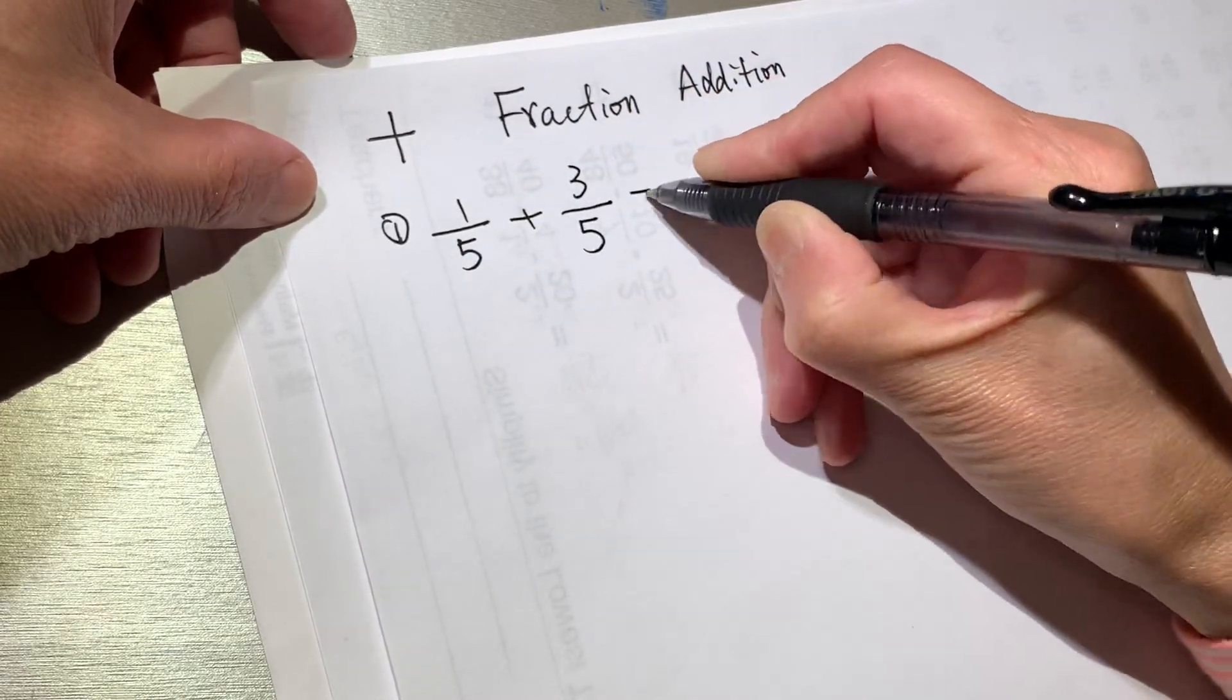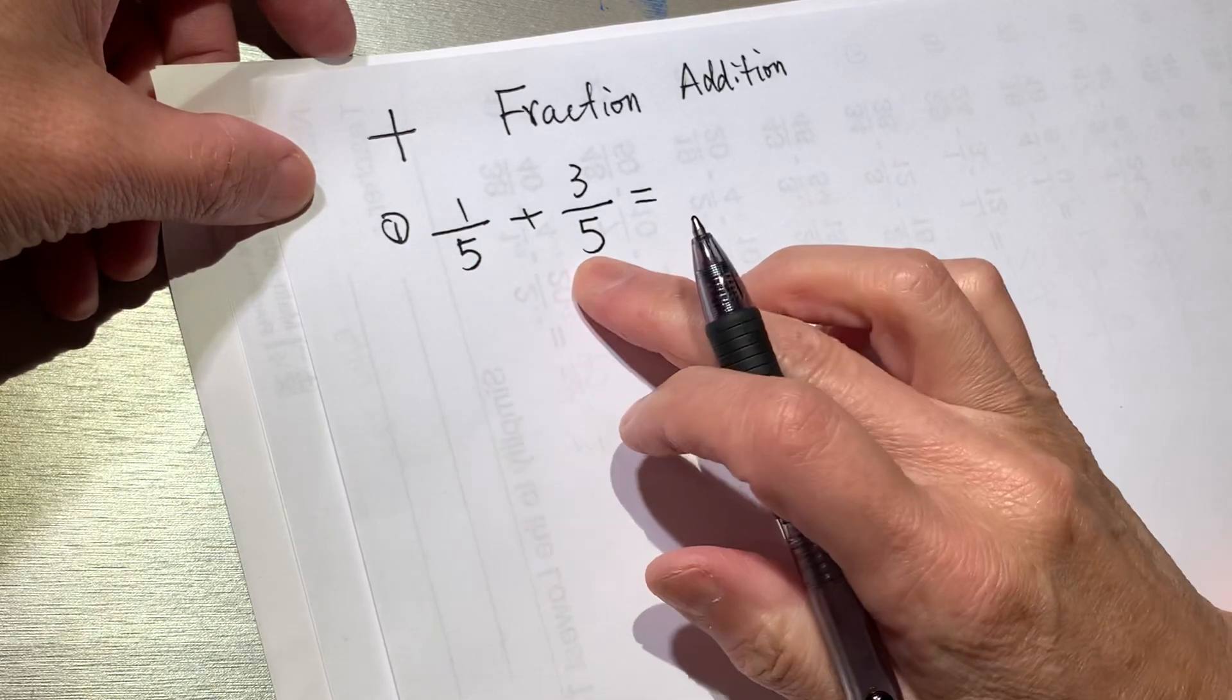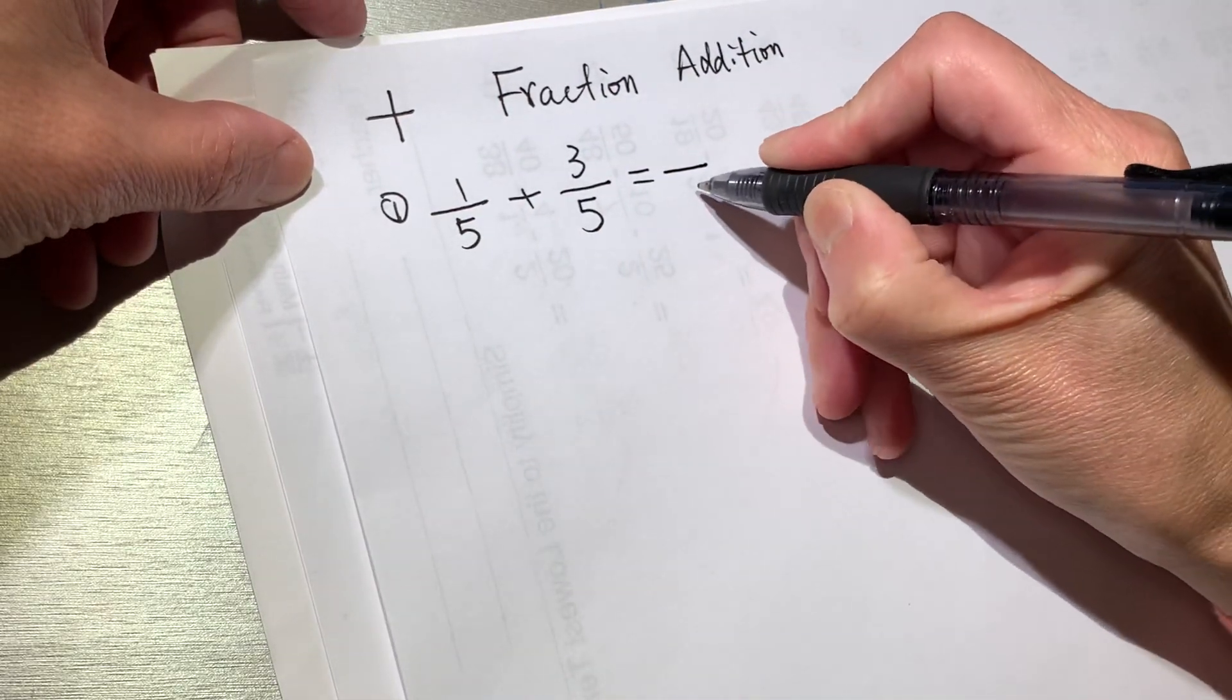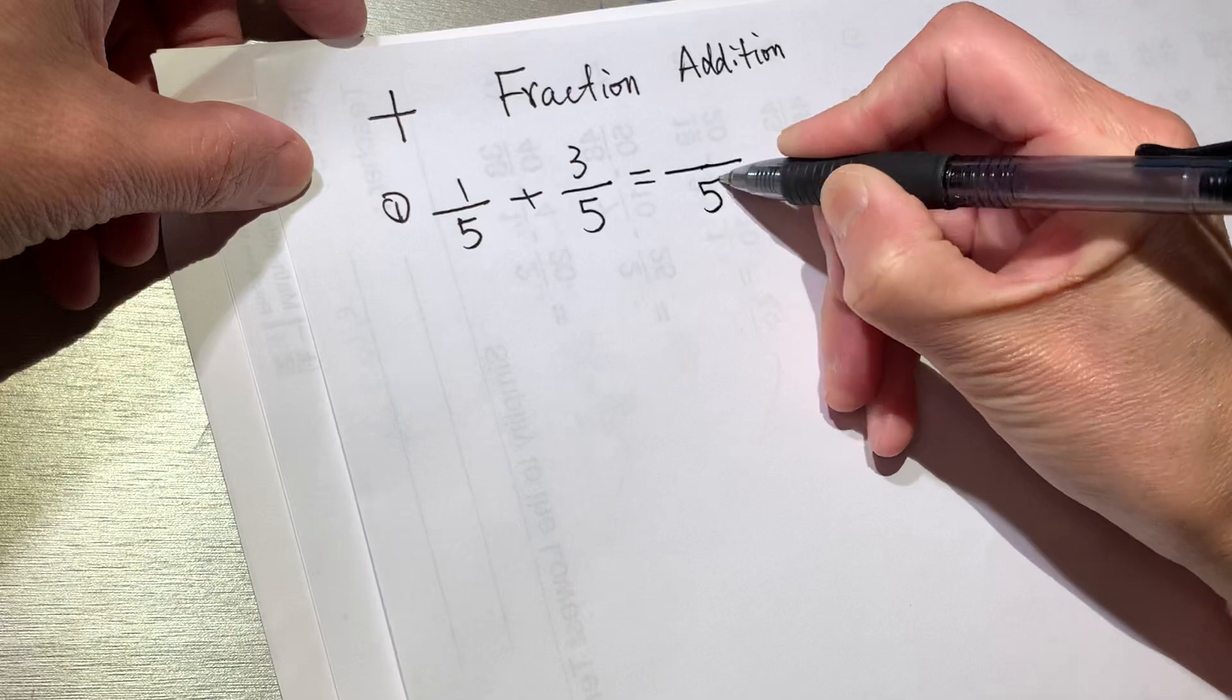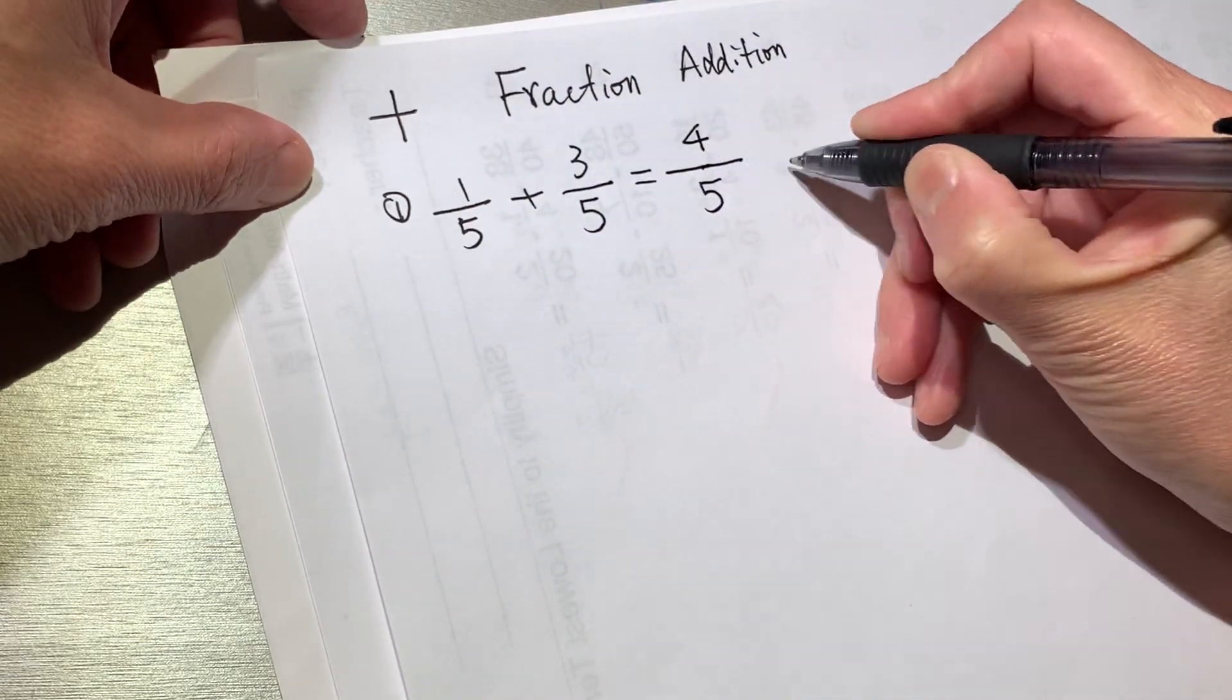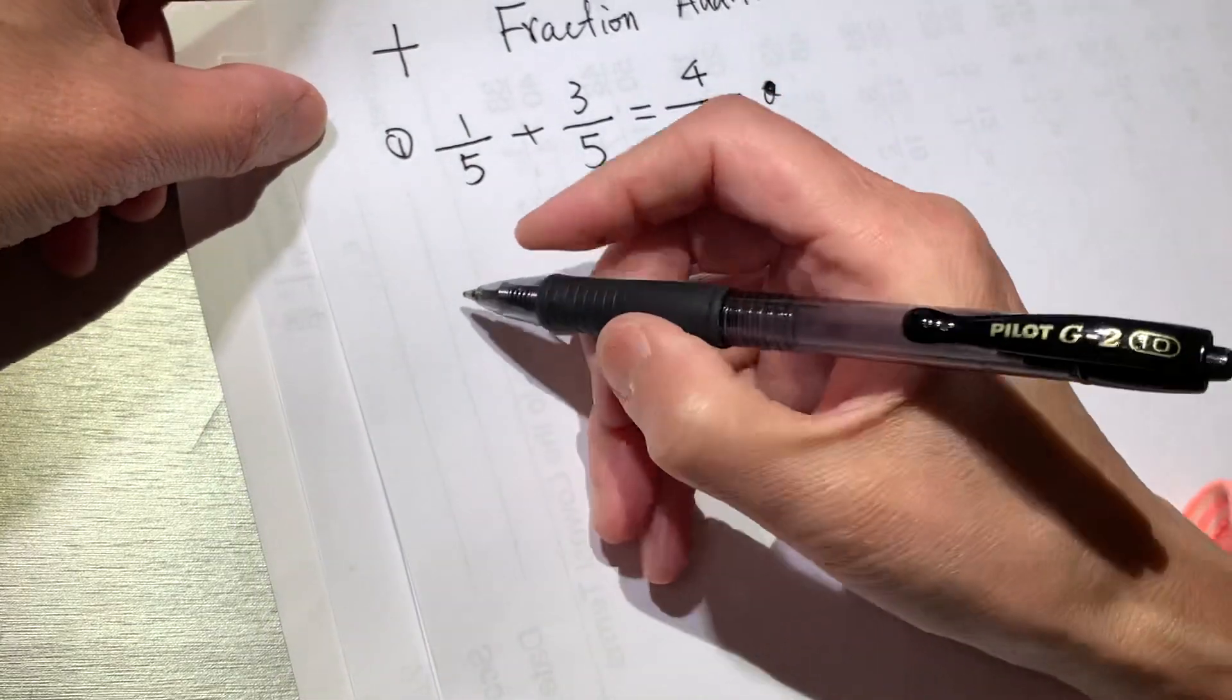First problem: one-fifth plus three-fifths. The denominator is the same, the bottom part is the same. We can go directly. Bottom is 5, and the top, first number plus second number, 1 plus 3 is 4. And this is the result. No need to change anything.